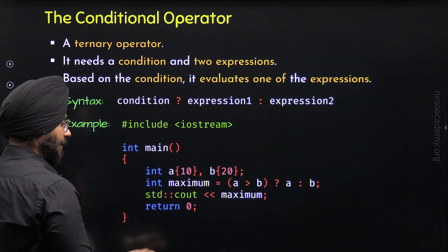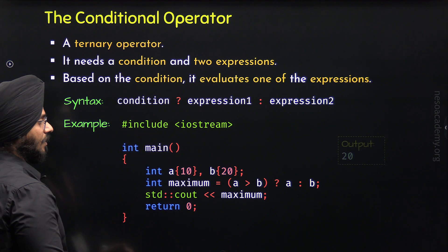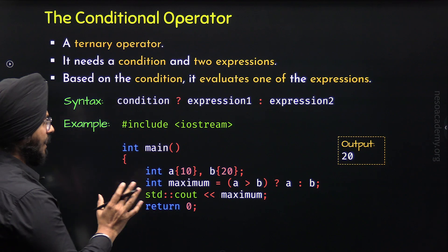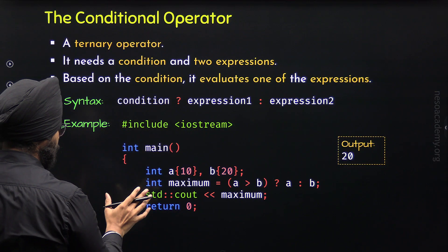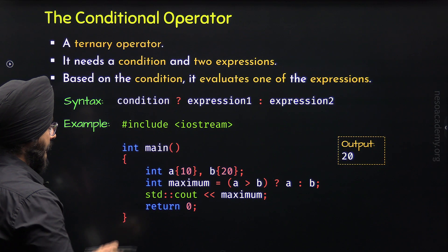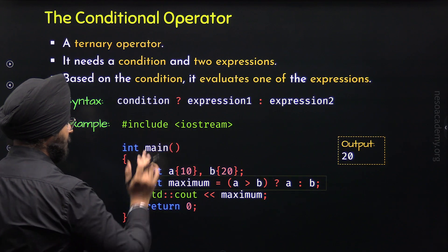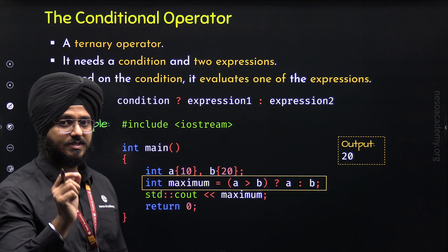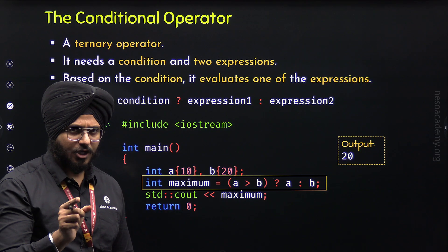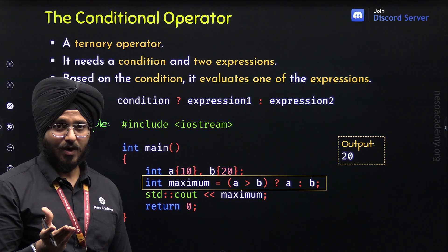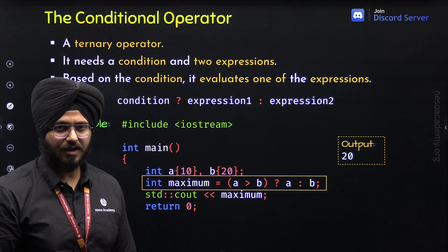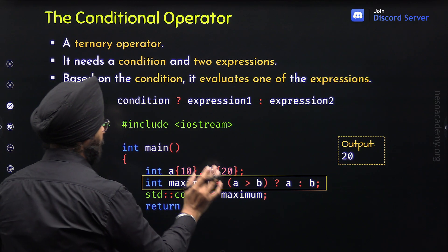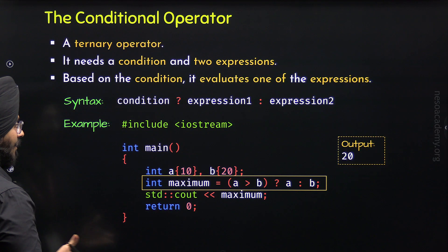We can print this value with std::cout. When we execute this program, we will get the output as 20. So with this, we have understood how to use the conditional operator in a C++ program. Now, I want you to focus on this specific line. By the way, we can replace this line with an if-else statement. If you already know C programming, you must know if-else. If not, I will explain it by converting this line to an if-else statement.